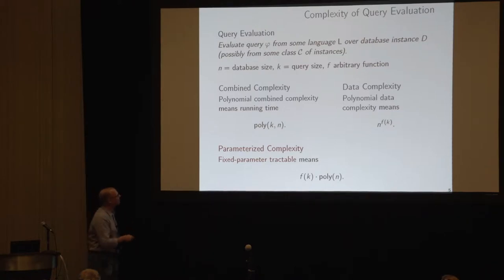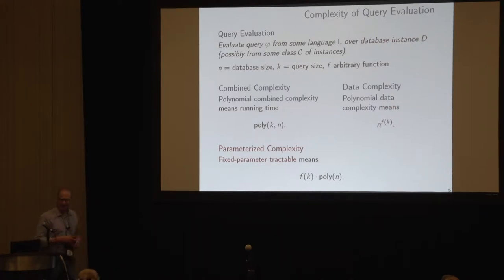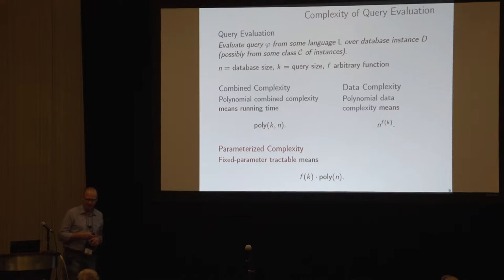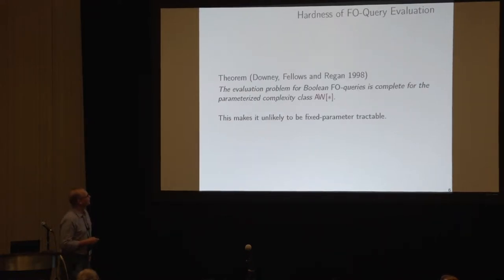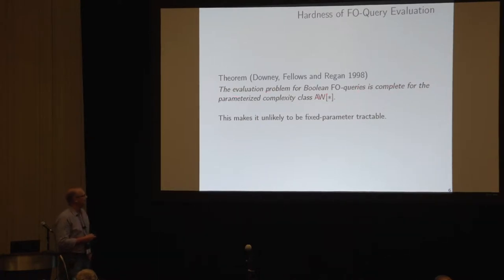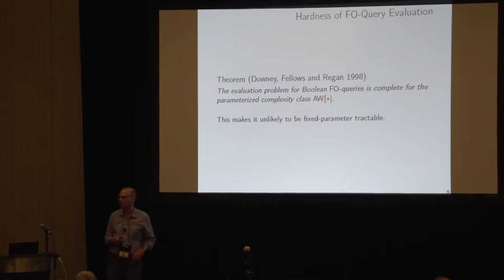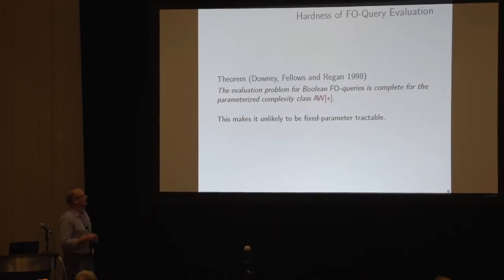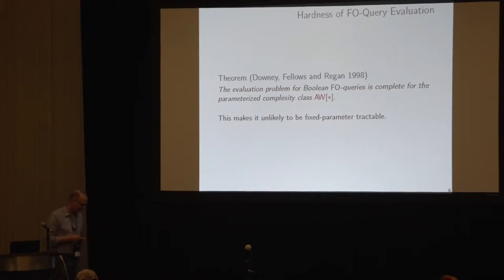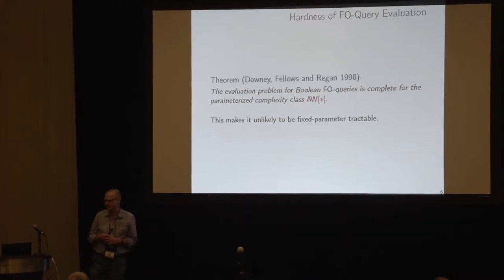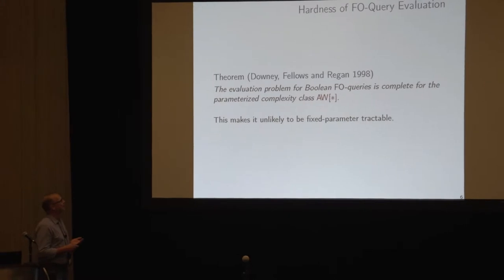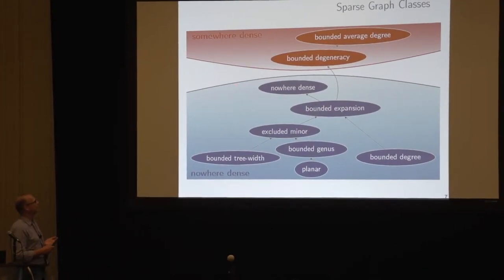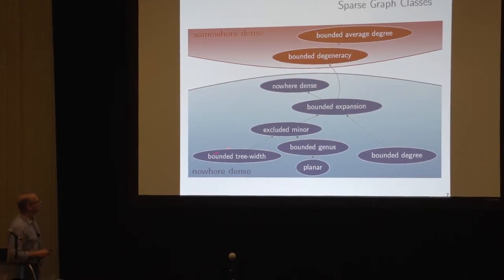I've been working on this for a long time, looking in particular at first-order logic and trying to understand on which classes of structures it's fixed-parameter tractable. In general, it is not: the evaluation problem for boolean first-order queries is complete for a parameterized complexity class called AW*, meaning it's unlikely to be fixed-parameter tractable. But if we restrict the input instances, it can be tractable. I've looked at sparse graph classes for a long time.